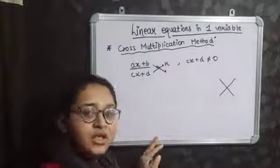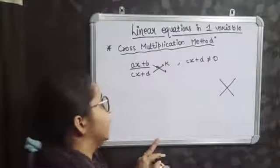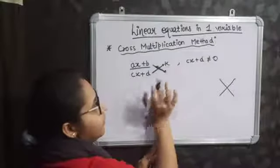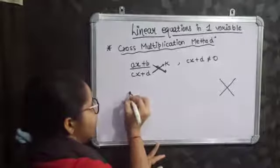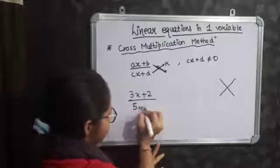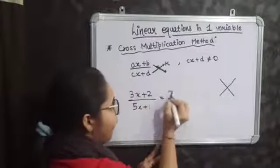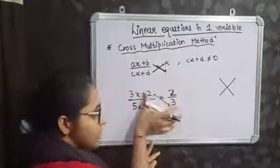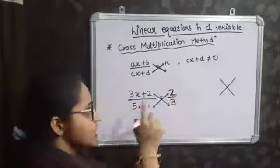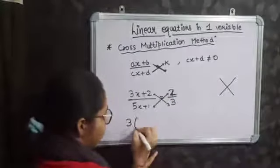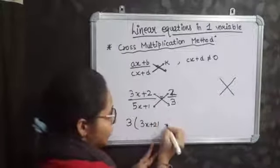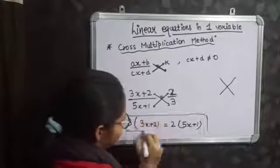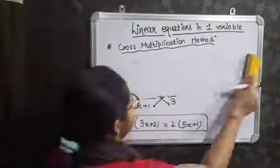So how will you solve these types of equations using cross multiplication method? You will cross multiply the terms. For example, taking the general form: 3x plus 2 upon 5x plus 1 is equal to 2 by 3. According to cross multiplication, you multiply these two terms and similarly these two terms. So it gives you 3 multiplied by 3x plus 2, which is equal to 2 multiplied by 5x plus 1.